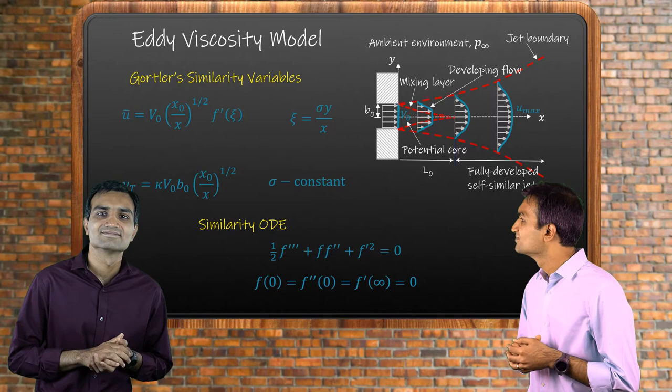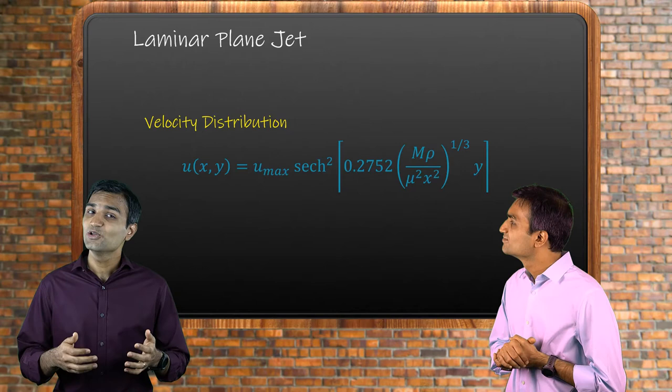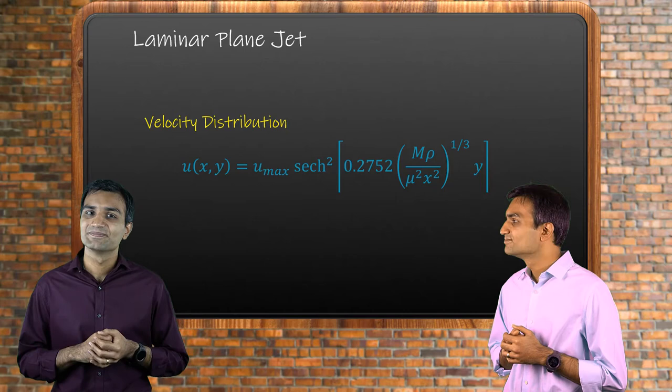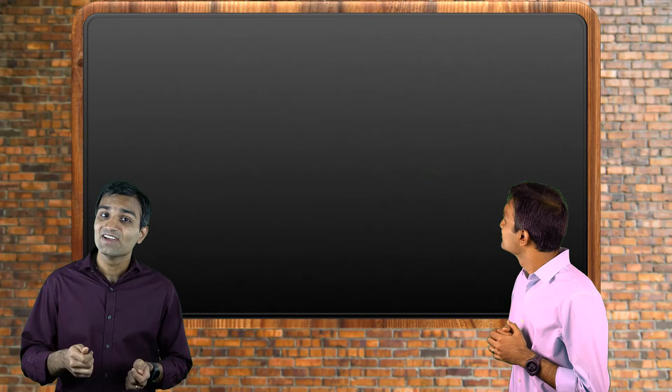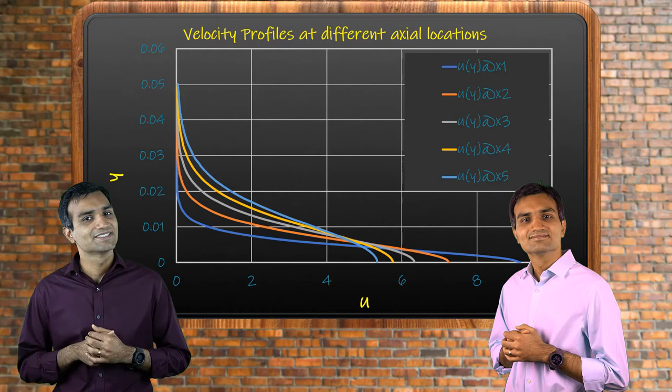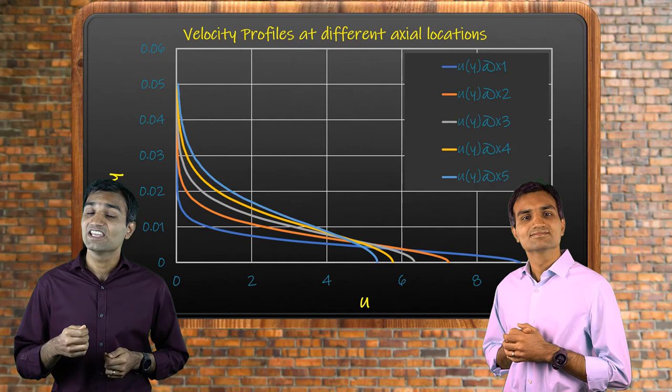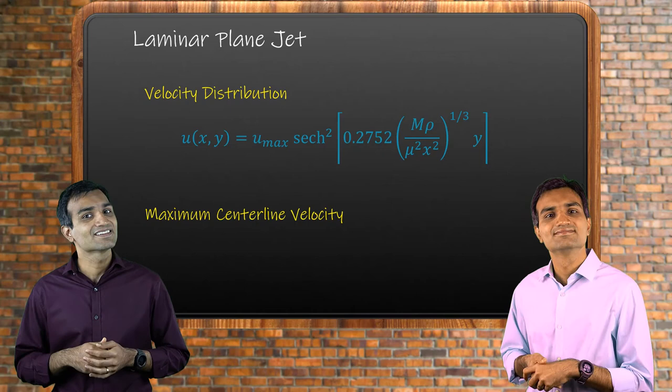On solving the laminar equations, the solution gives us the velocity distribution as well as the maximum centerline velocity. When obtained, the velocity profiles are plotted at various axial lengths and we obtain a self-similar profile of the laminar jet. This jet continues to spread as it travels away from the issued location. The centerline velocity of the laminar jet decreases at the rate of one-third power of the distance from the jet exit.